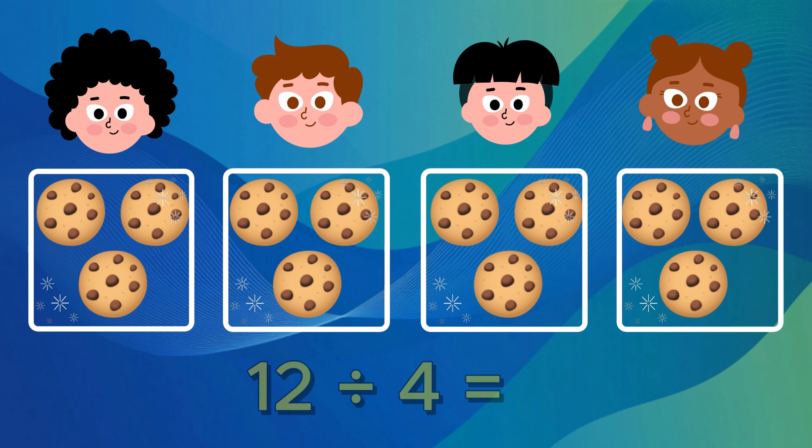Now, we count how many are in one box. Each kid got 3 cookies. So that's our answer. 12 divided by 4 equals 3.